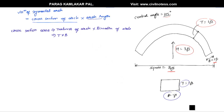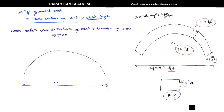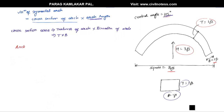We also need to determine the formula for the arch length, because the arch subtends a 105-degree angle and we need to determine its proper length. The formula for arch length is: Arch length = θ × π × r / 180.